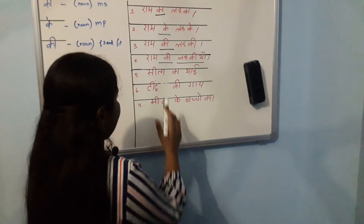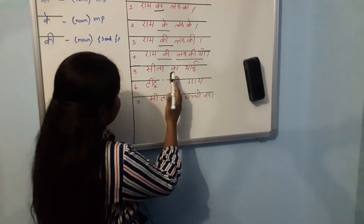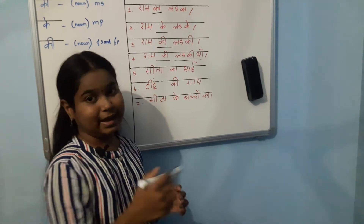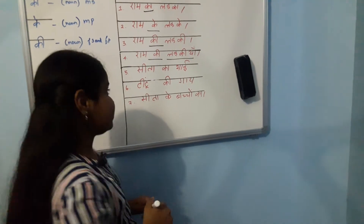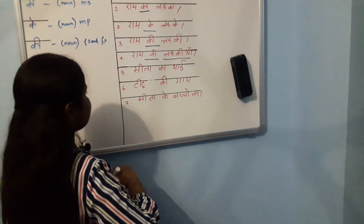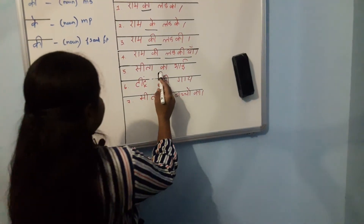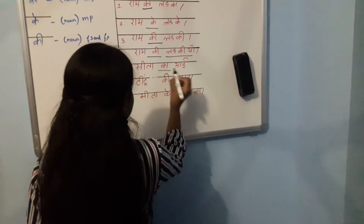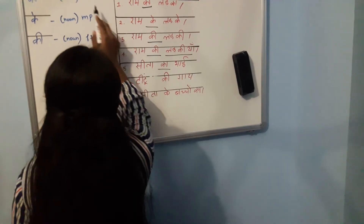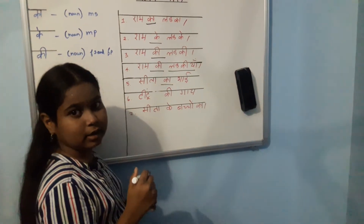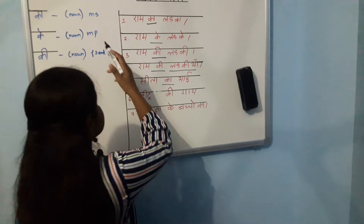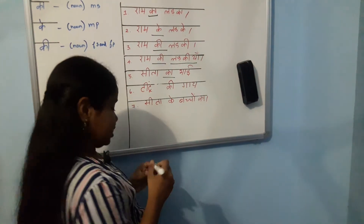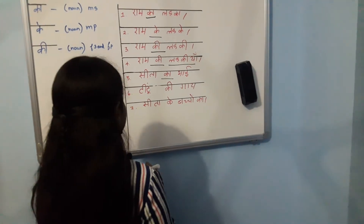Ram Sita Kha Bahi — meaning Sita's brother. Here 'Kha' is used because 'Bahi' (brother) is masculine singular.